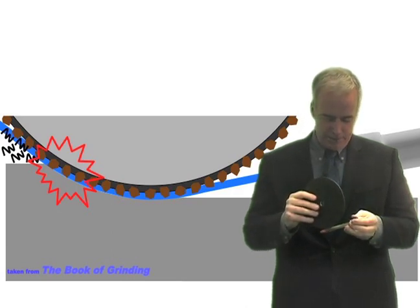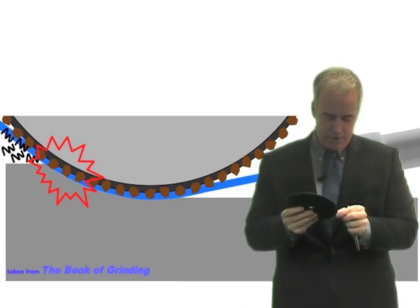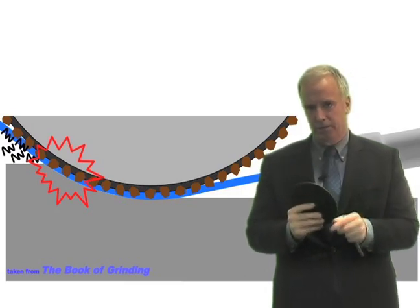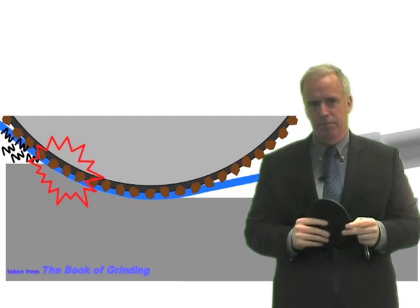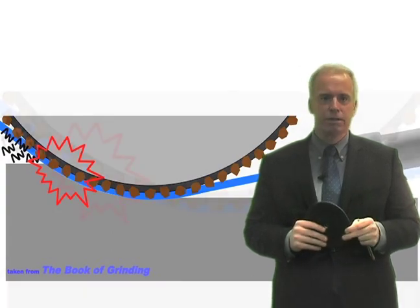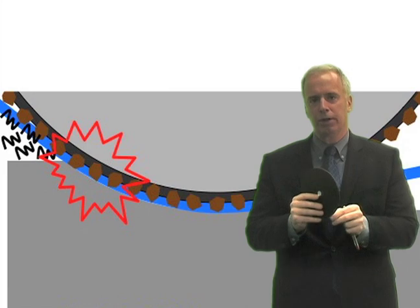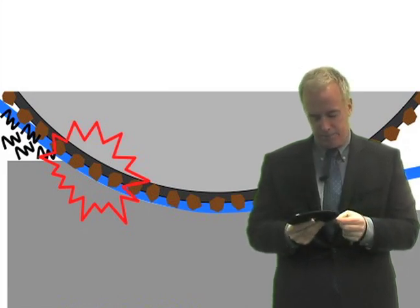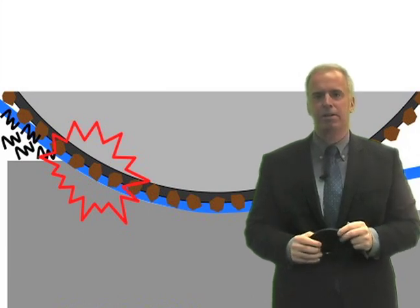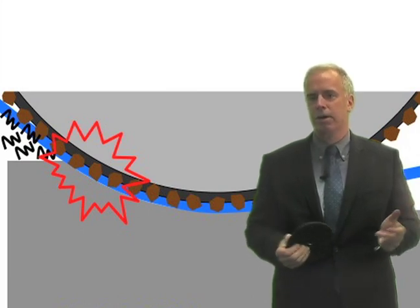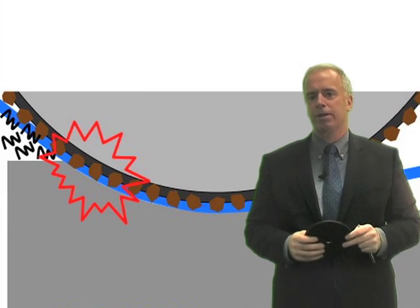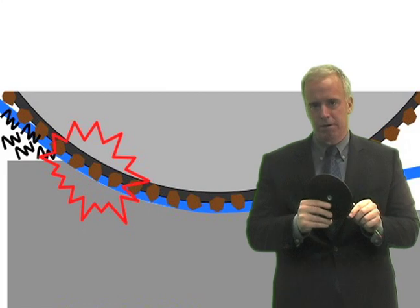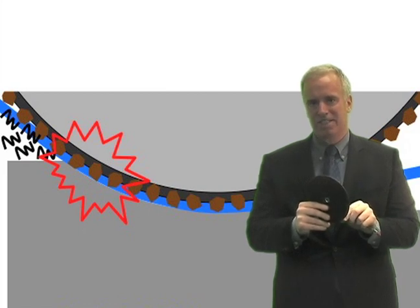But then what happens is the coolant is not enough to take away enough heat, and instead of getting little bubbles popping out one at a time of boiling coolant, we get a layer of boiling coolant, a big layer here. And that layer of boiling coolant, now, steam is not a very good conductor of heat. Water sucks away heat pretty well. Steam has a low thermal conductivity, doesn't suck it away very well. So all of a sudden, we've lost all the cooling benefit because now we've got that layer of steam there.